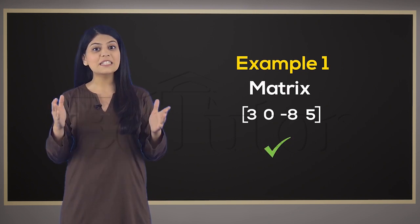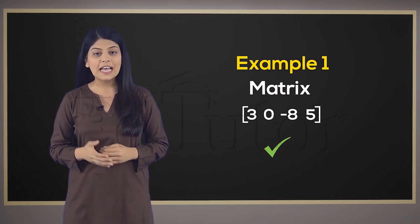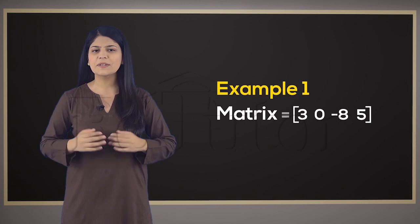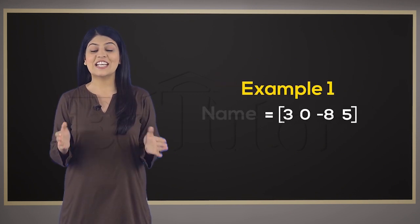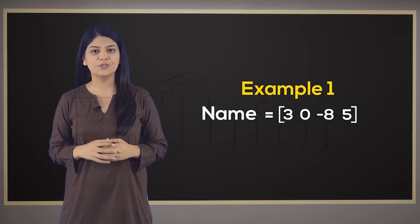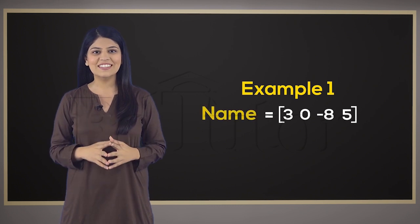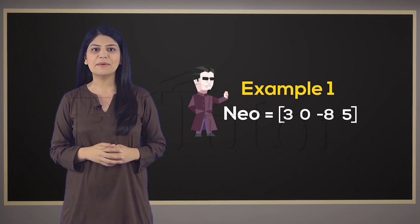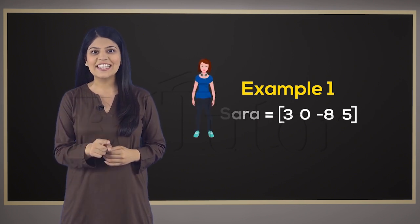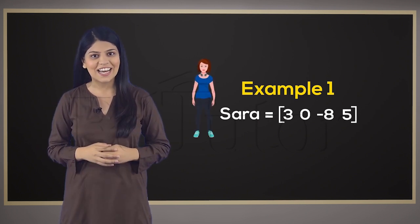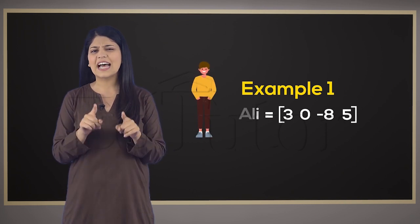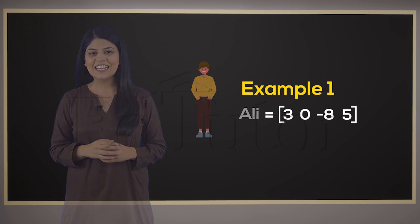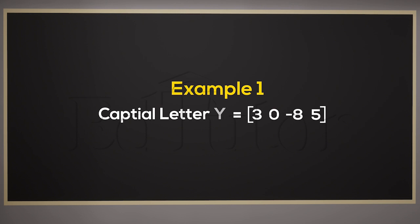But wouldn't it be tiresome to keep referring to it as this matrix or that matrix? So, to avoid any confusion, we'll give it a name. You can be inspired by Neo and want to keep the same label, or you could try naming it after your friends Sarah or Ali. But that's pretty unusual. Instead, we're going to keep our tradition and call it by a capital letter like A.